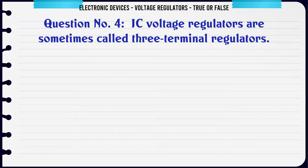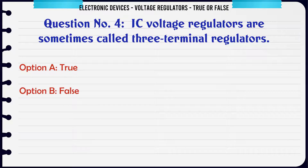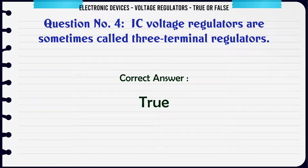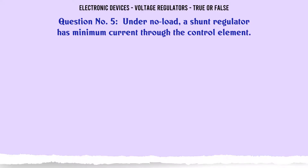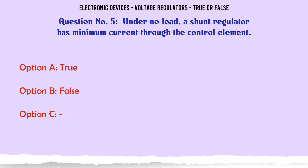IC voltage regulators are sometimes called 3-terminal regulators. A. True. B. False. The correct answer is: True.